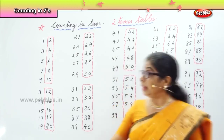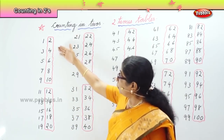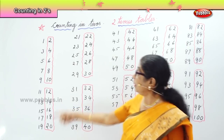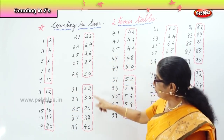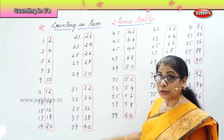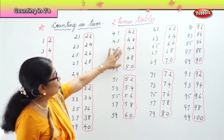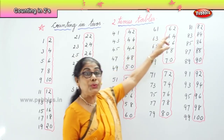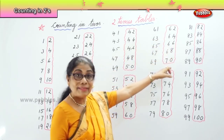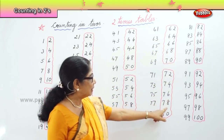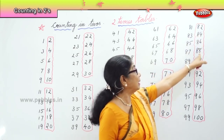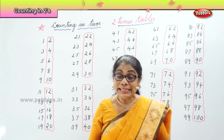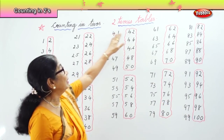Forget the ones we did not box — look only at what is inside. We have built our two times table: 2, 4, 6, 8, 10, 12, 14, 16, 18, 20, 22, 24, 26, 28, 30, 32, 34, 36, 38, 40. Then we have 42, 44, 46, 48, 50, 52, 54, 56, 58, 60, 62, 64, 66, 68, 70, 72, 74, 76, 78, 80, 82, 84, 86, 88, 90, 92, 94, 96, 98, 100. Easy way to build our two times table.